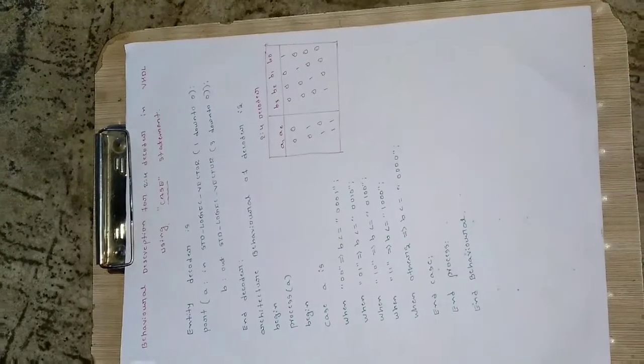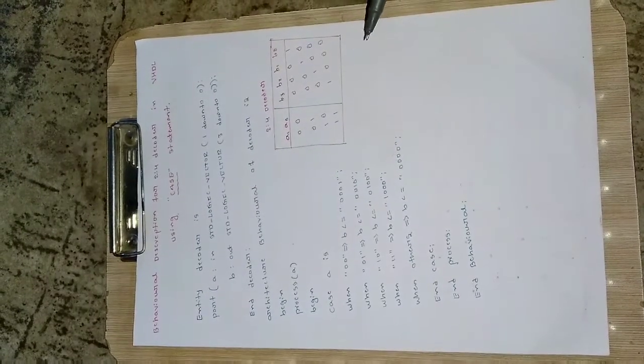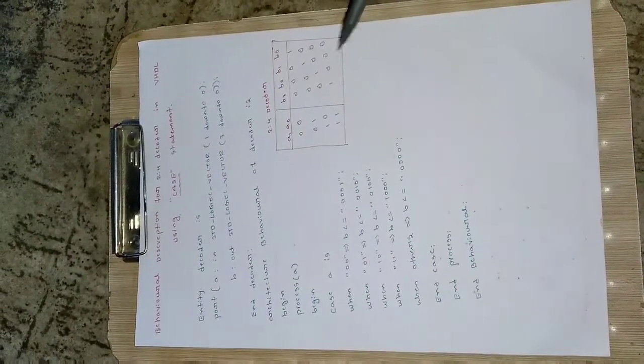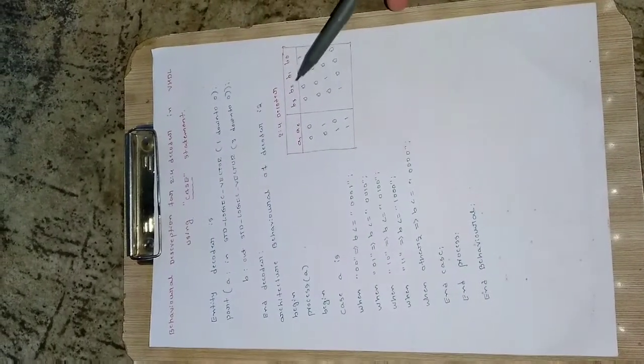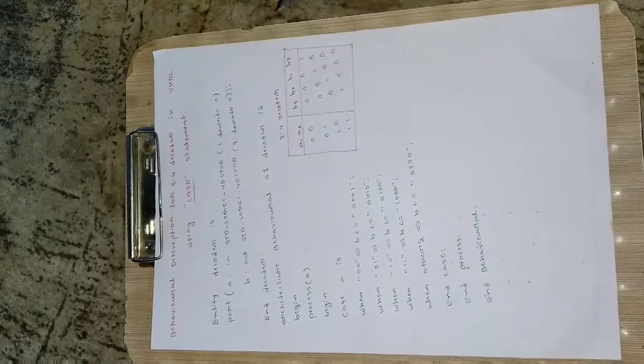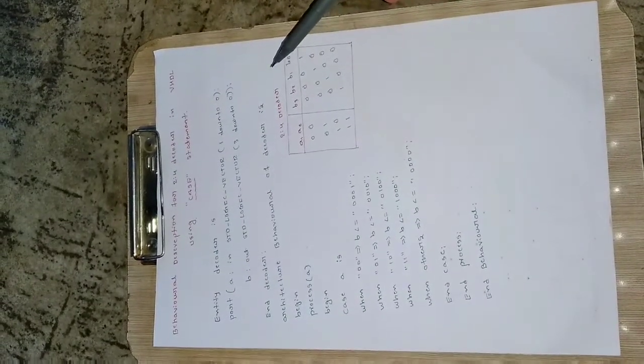So first we will see the truth table for a 2 to 4 decoder. A decoder is something which converts few data to many data. So 2 bits are converted to 4 bits here. Like this we will be having 4 to 16, 3 to 8, so different types of decoders are there. In particular we are discussing about a 2 to 4 decoder.